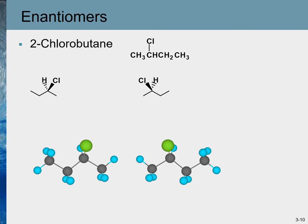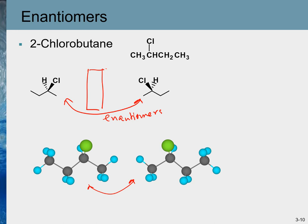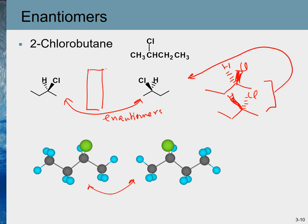Two different ways to draw a pair of enantiomers of lactic acid are shown here. All biologically active molecules have chiral centers. One chiral center gives rise to two enantiomers. For 2-chlorobutane, the mirror gives us a pair of enantiomers, also shown in ball-and-stick model. Another easy way to draw the mirror image is to convert the wedge bond to a dash and the dash bond to a wedge — these two represent the same pair of enantiomers.